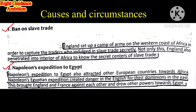First point: Ban on Slave Trade. England, from the western part of the African continent, started campaigning to ban the slave trade as much as possible. After England took this step, other European countries also banned the slave trade.